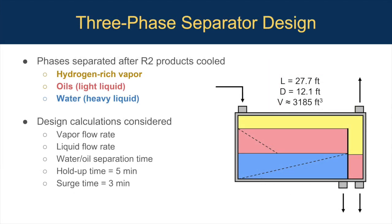This is a picture of our three-phase separator during normal operation. The phases are separated after the products from the second reactor are cooled. The design calculations for this separator consider the vapor flow rate, liquid flow rate, water-oil separation time, hold-up time, and surge time. It's important that the volume of the separator is large enough to allow time for the water-oil and oil-water interfaces to separate. The hold-up condition is when the feed stops and the exits remain open, and the surge condition is when the feed remains open but the exits close.